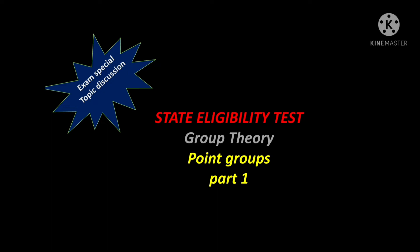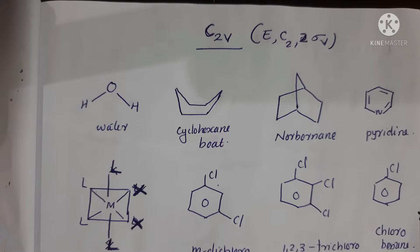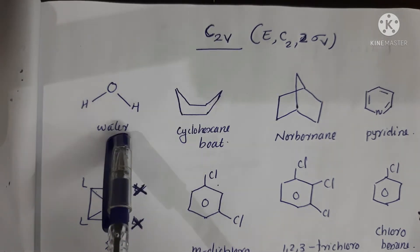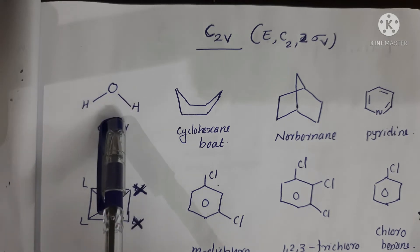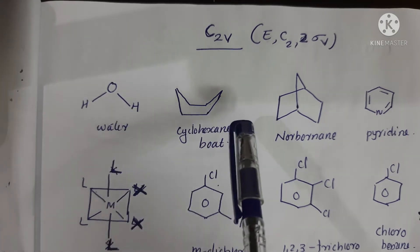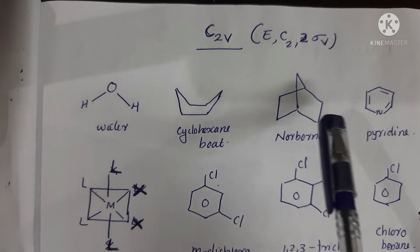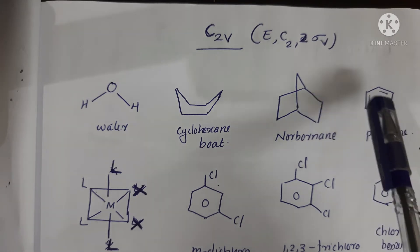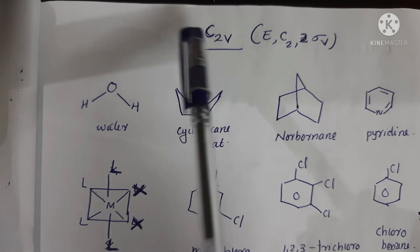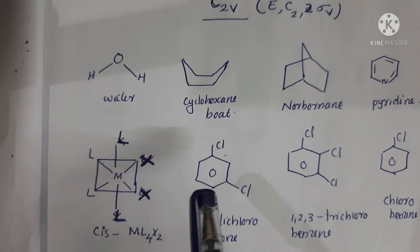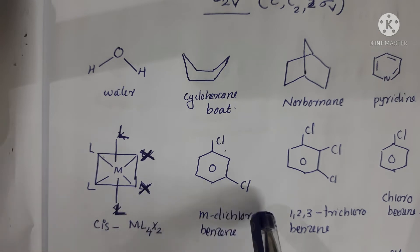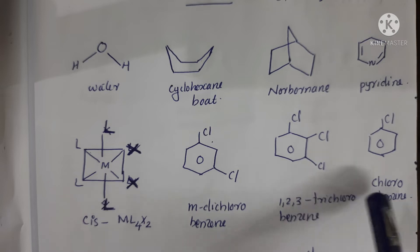First, we will take a few examples of C2V point groups. Cyclohexane boat conformer is an example of C2V point group. Pyridine is a C2V point group. Norbornane is an example of C2V point group. Cis-ML4X2, the cis former, is C2V.